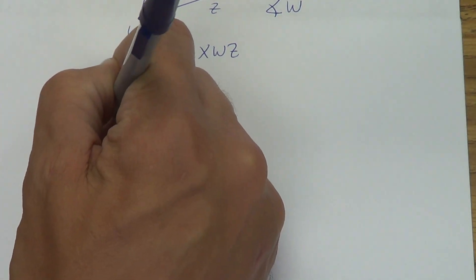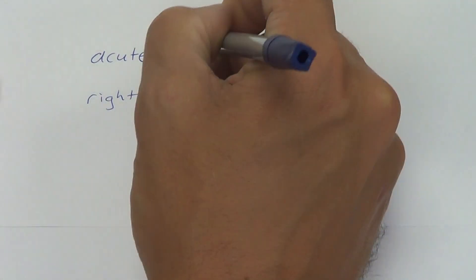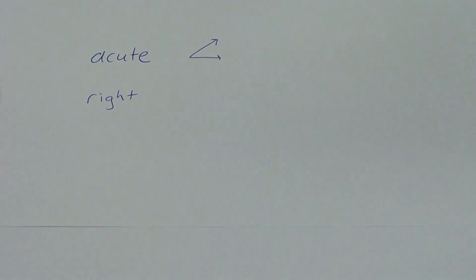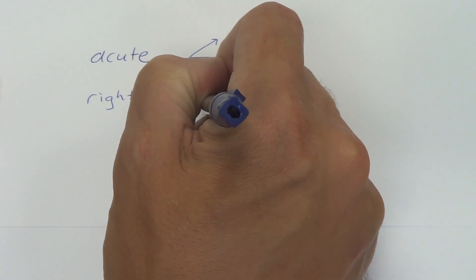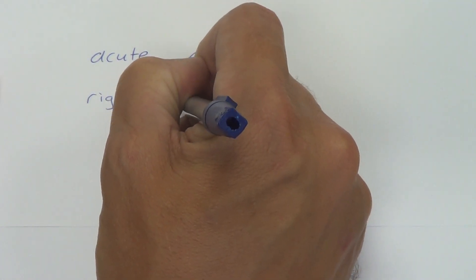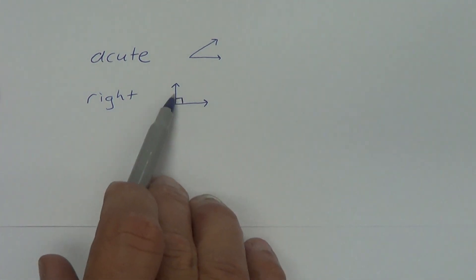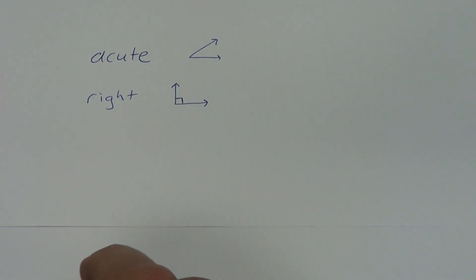We can have an acute angle — an angle whose measurement is less than 90 degrees. It's kind of small. A right angle is an angle whose measurement is exactly 90 degrees. It looks something like that, and usually we put a little box in here to signify right angle. Right angles come from perpendicular lines or perpendicular rays, but the measurement is exactly 90 degrees.